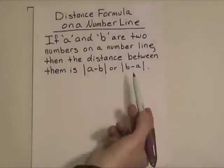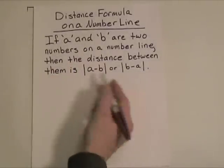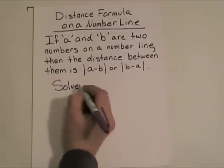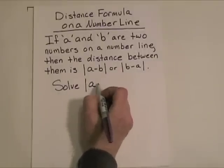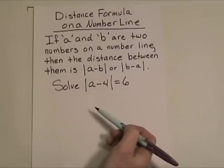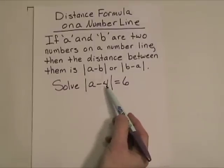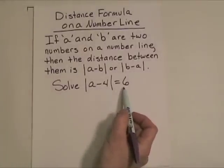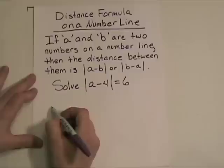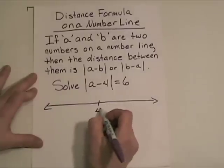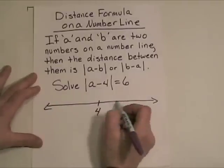So having said that, any time you want to find the distance between two numbers, you just subtract them and take the absolute value. Let's say I asked you to do this: tell me, what number is exactly six units away from four? Or maybe I should say, what numbers? Maybe there are two numbers that are exactly six units away from four. Well, let's take a look. Let's look at this graphically. Let's put four right here smack dab in the center.